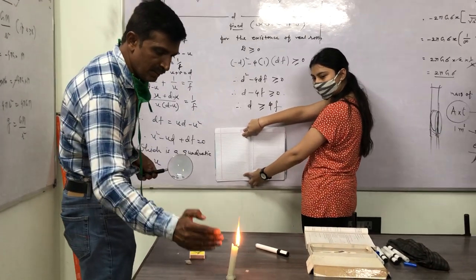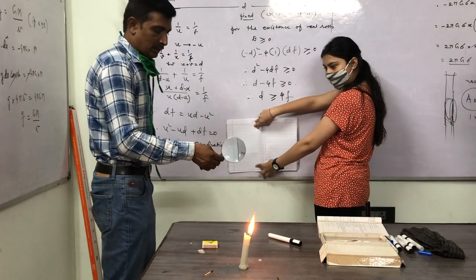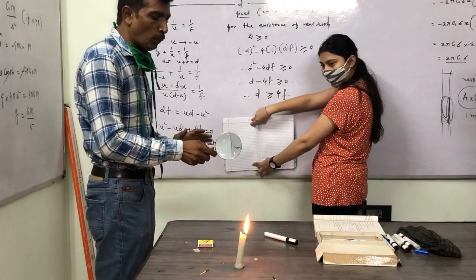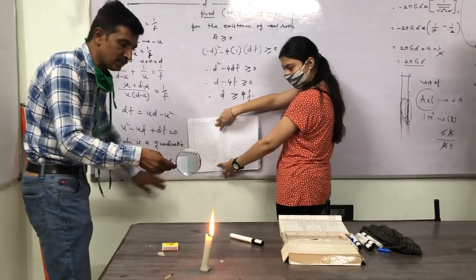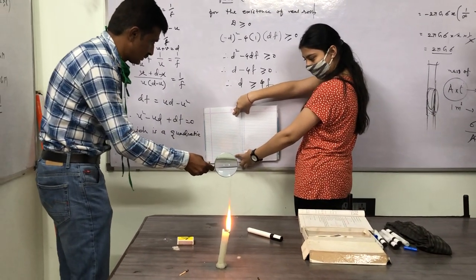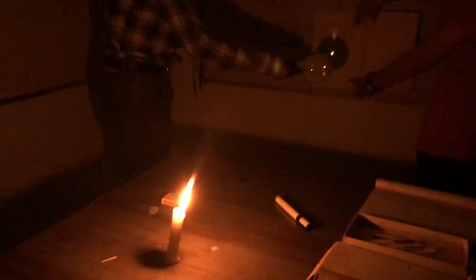If we fix the distance between the candle flame, which is the object, and the screen, we want to prove that for two positions of the lens, we can get a real image on the screen. Light off. From the side.